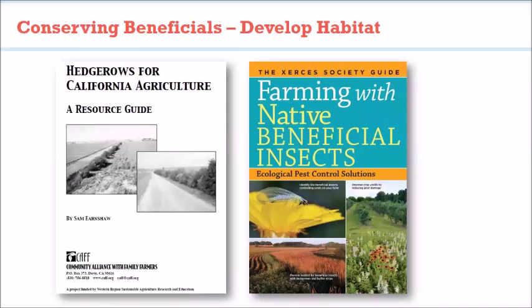This is another successful example of conservation biological control. In general, the flowers that work best tend to be very small ones, since a lot of these beneficial insects are tiny. There's a book called 'Farming with Native Beneficial Insects' that lists plants that can be used. There's a lot of literature available online for more information — this topic alone could fill a whole other session.